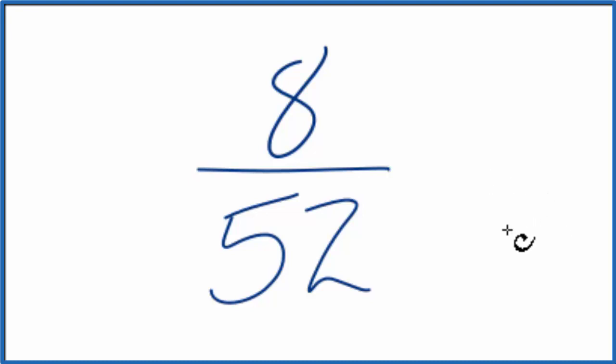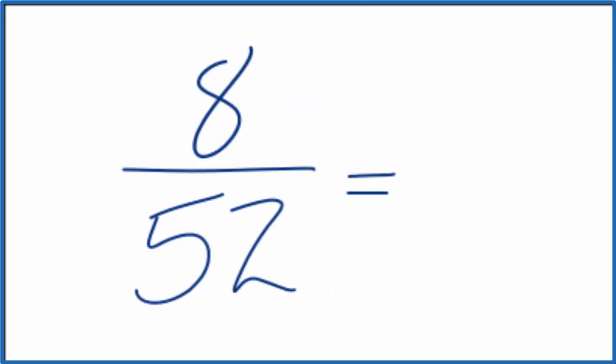So we need to find a common factor, something that goes into 8 and 52. I think what I'll do is divide both the numerator and the denominator by 2 to get this a little bit reduced.